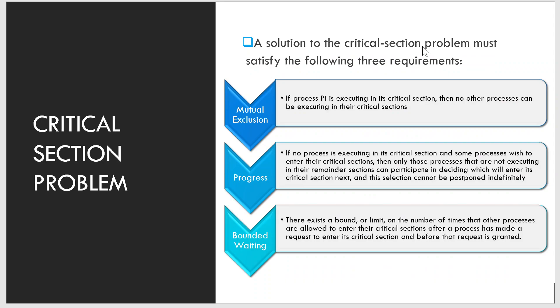A solution to the critical section problem must satisfy three requirements. The first is mutual exclusion: if process Pi is executing in its critical section, then no other process can be executing in their critical section. For example, suppose there are two processes P1 and P2. If P1 is executing its critical section CS1, then P2 cannot execute its critical section CS2 at that particular time.